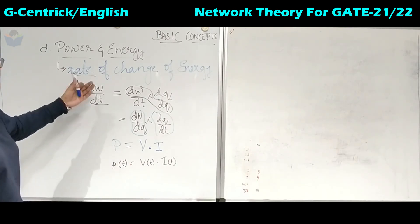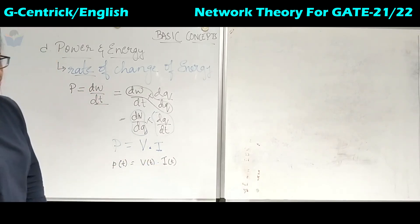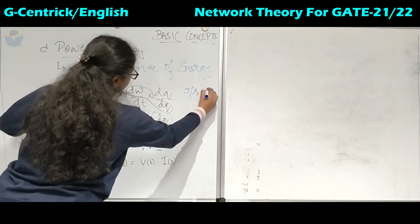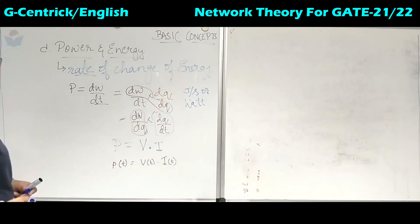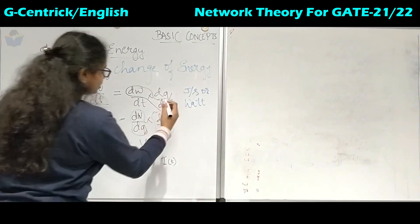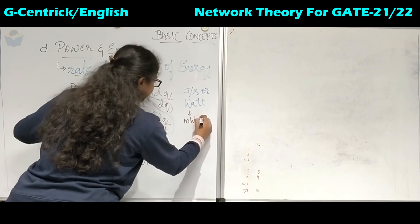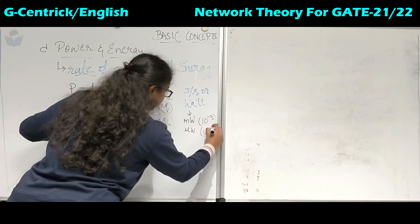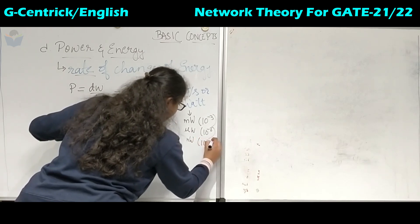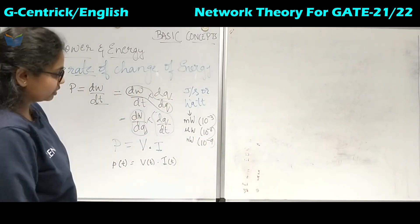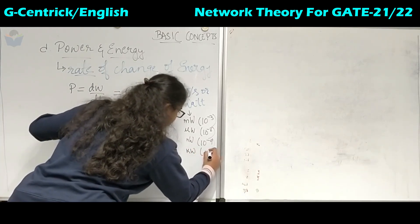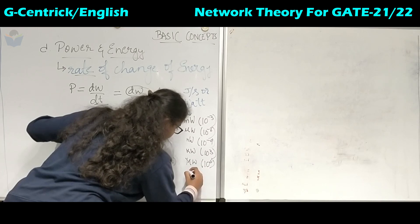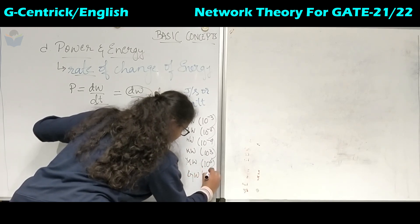The unit of power is joules per second, or watts. This unit has various subunits: milliwatt (10⁻³), microwatt (10⁻⁶), and nanowatt (10⁻⁹) are the smaller units. Larger units include kilowatt (10³), megawatt (10⁶), and gigawatt (10⁹).